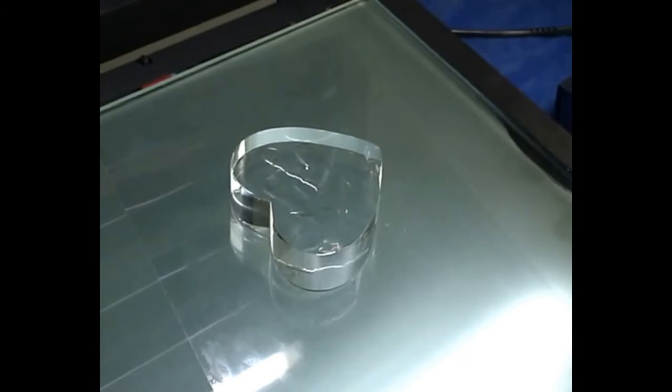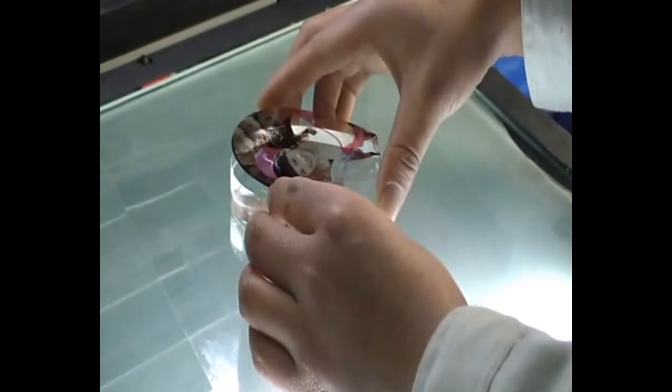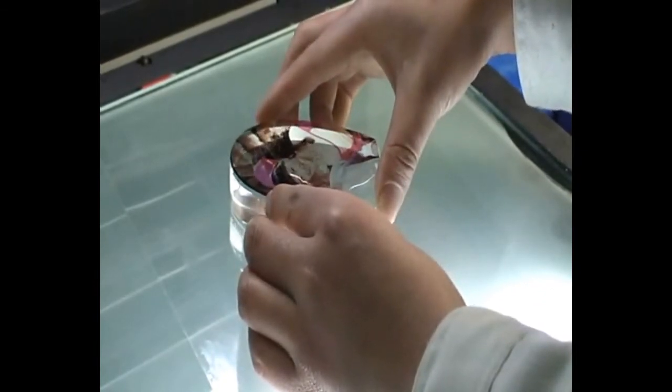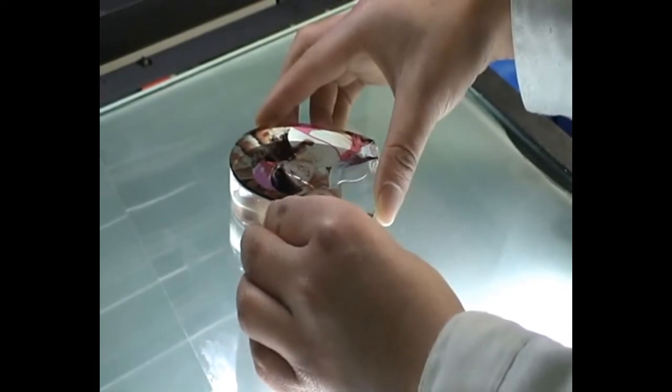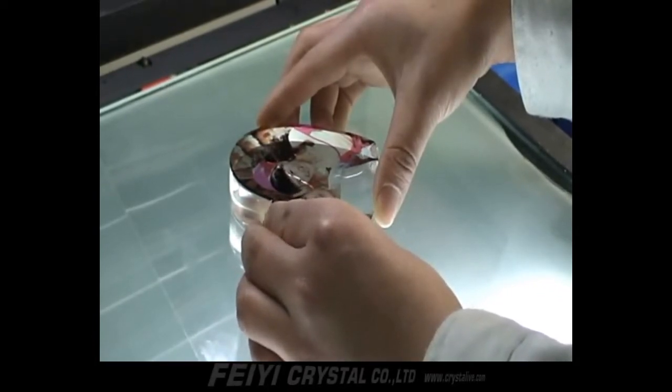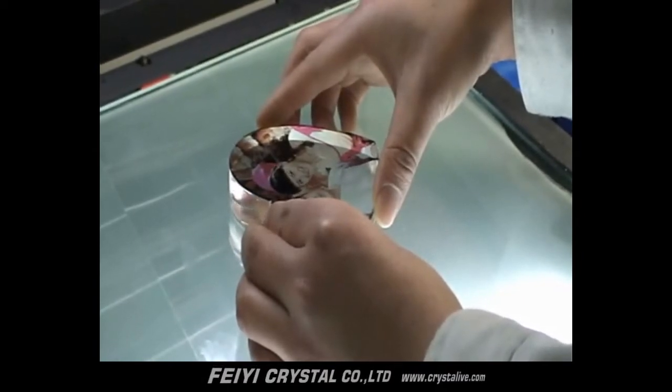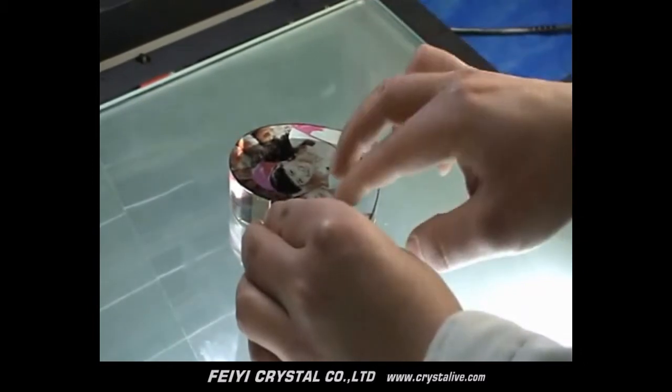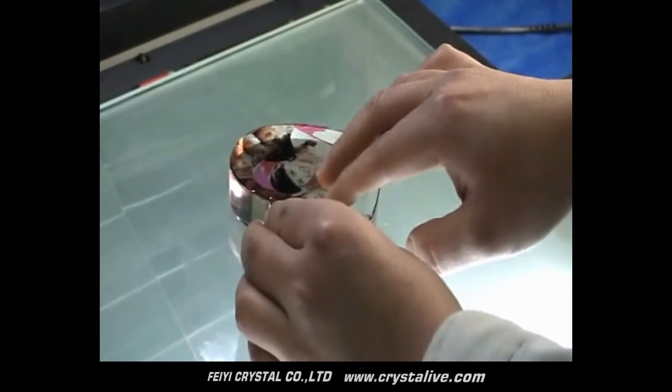Then take out the colored photo glass and match with the crystal again. Tilt from the hand line so as to avoid the occurrence of bubbles. We need to slowly match. If you see some bubbles, press it.